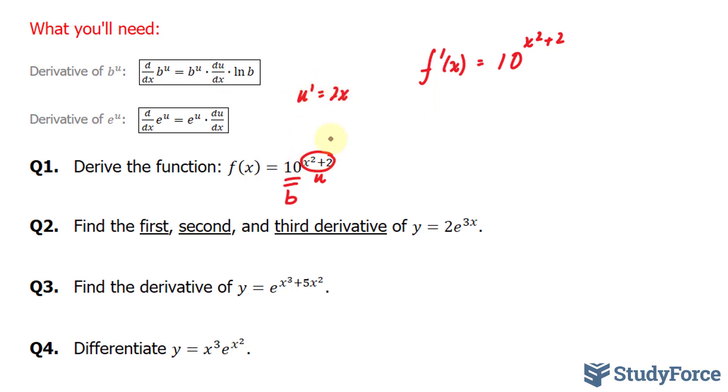The derivative of this, we can use the power rule. u' is equal to 2x and the derivative of 2 is 0. So we'll write down 2x right next to it, and this dot means multiplication times ln of our base 10. This expression represents our final answer.